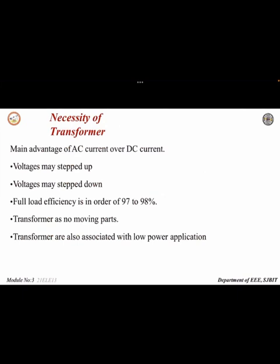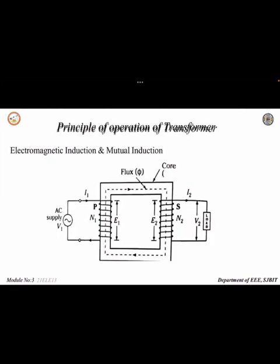Through the process of electromagnetic induction, why do we require a transformer? The main advantage of a transformer is we can step up the voltage or step down the voltage according to our requirement. Apart from that, the efficiency of the transformer is very high, in the range of 97 to 98 percent. Since it's a static device, it doesn't contain any moving parts, so losses will be less and efficiency will be more.